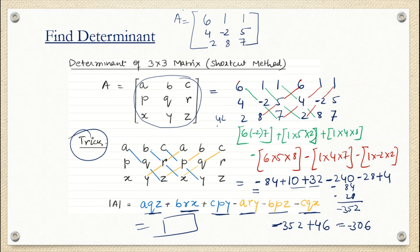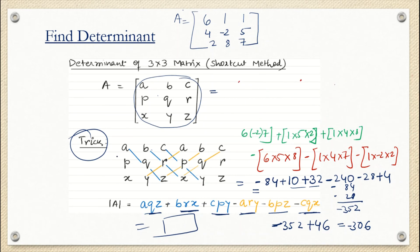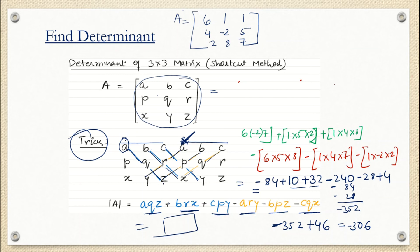It totally depends on you how you solve this matrix. What we are doing here is writing down the matrix twice, then drawing diagonal straight lines — three in the forward direction with positive signs, and three in the reverse direction with negative signs. Whichever way you find easy, you can use.